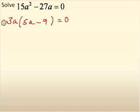And you can see that I do have a product now, and I will take each one and set it equal to zero. So, I can set the 3a equal to zero, and the 5a minus 9 equal to zero.